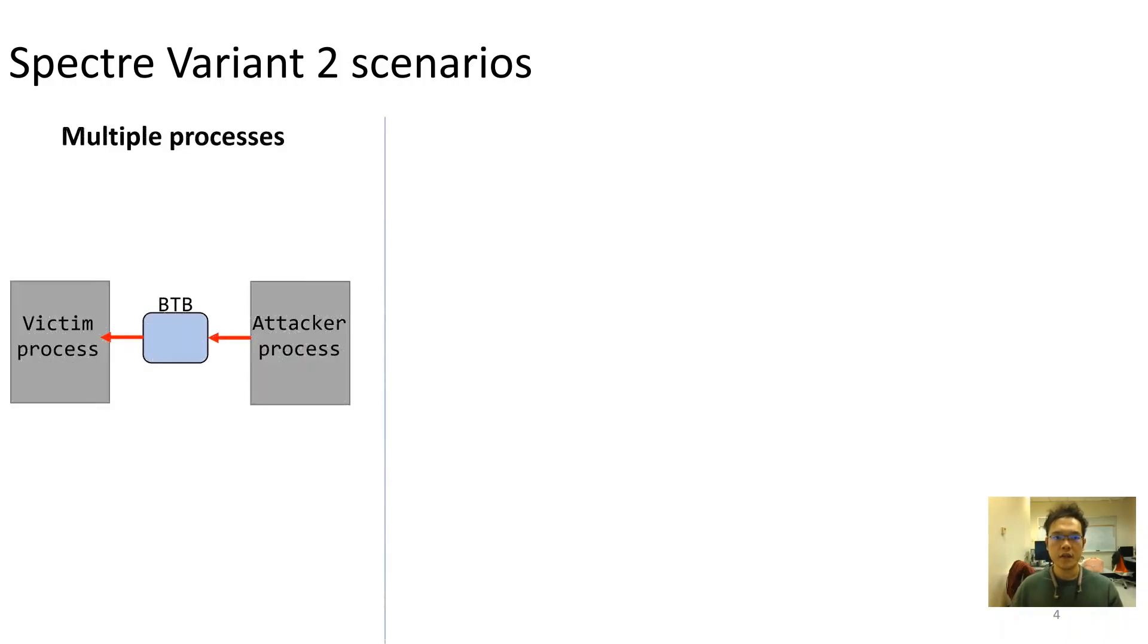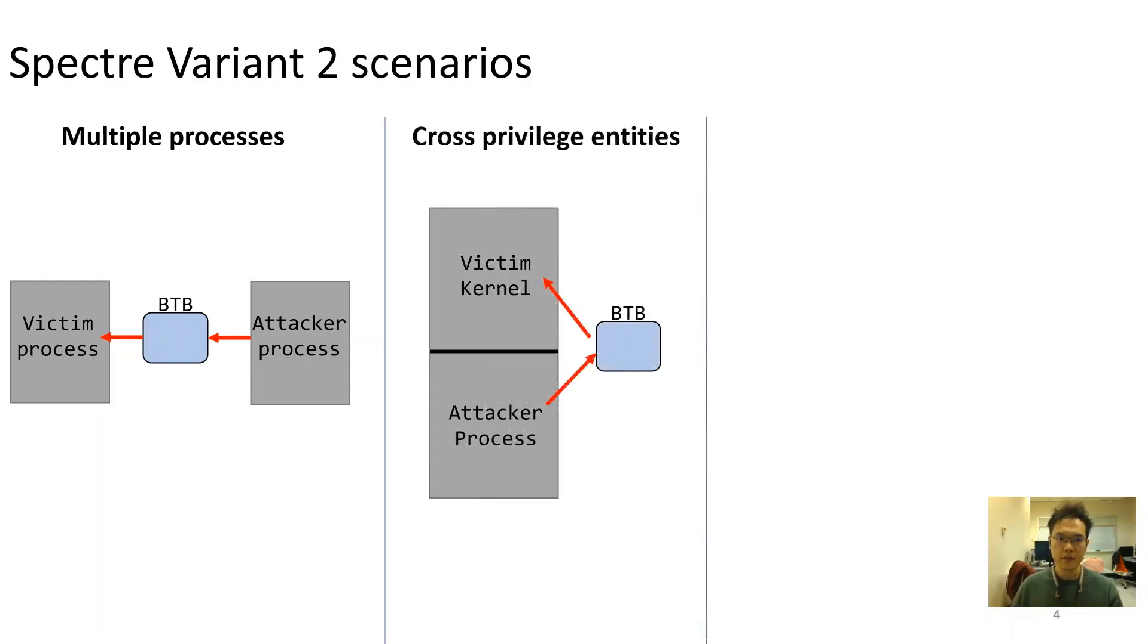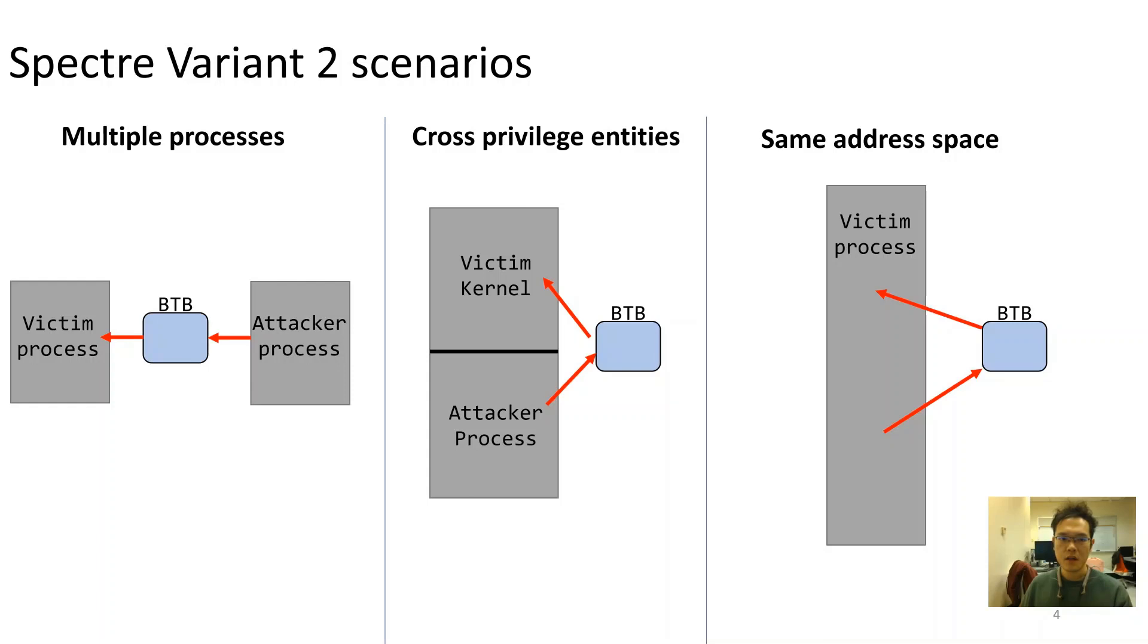Spectre 1 and 2 can apply to different attack scenarios. Using an attacker process, attacker could inject malicious branch target to attack a victim process. Or, an attacker can attack privileged space by injecting malicious target within his own process. In the same address space, a victim process can also be attacked with the malicious target injection within its own process as trojan attack.